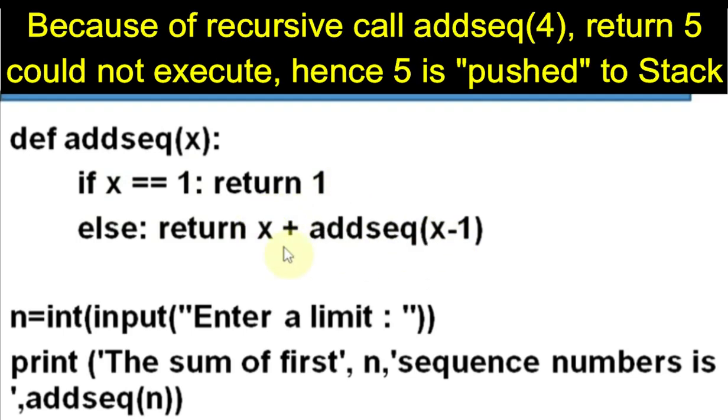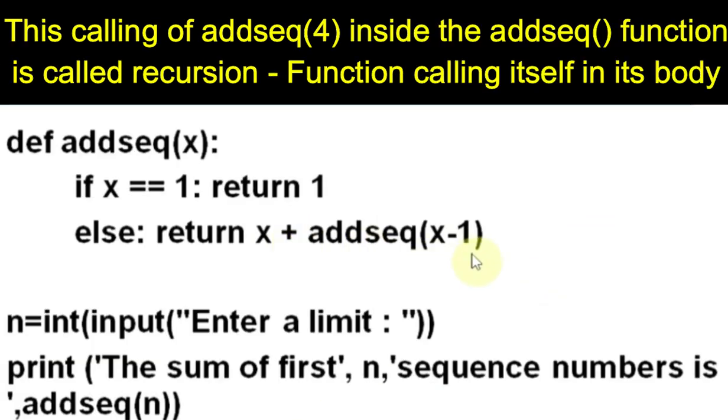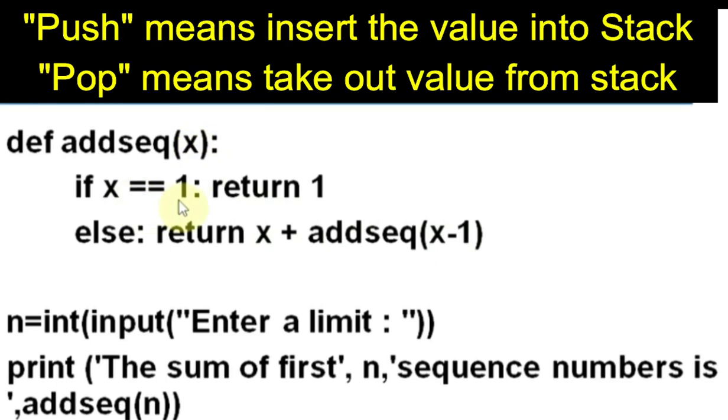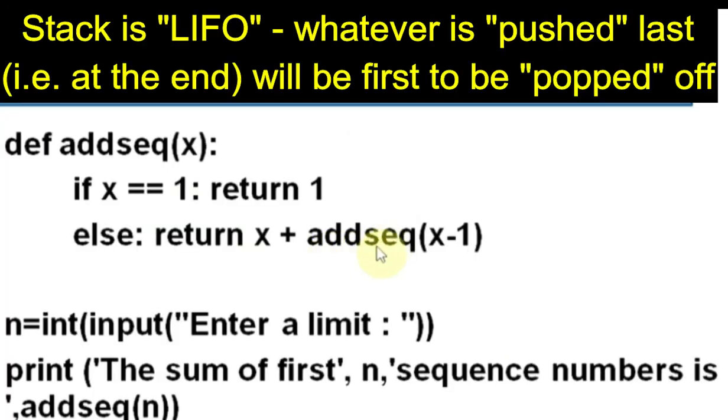So, this 5 was not able to go back to the main function. So, this 5 is pushed to the stack. And addseq function is called with the value 4, which will be assigned to the parameter x. Is 4 equal to 1? No. Go back to the main function, taking the value 4, which is not possible. So, 4 is also pushed to the stack. Addseq function is called with the value 3 and so on.